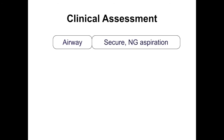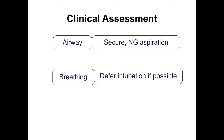Initial management of DKA starts like any acute condition: assess airway and secure it. Place NG tube if the child has had sugary feeds to prevent further hyperglycemia. For breathing — these children look sick but be very cautious about rapid intubation. Children with DKA improve dramatically with medical management. Intubation may temporarily increase CO2, exacerbating cerebral edema, and should be deferred unless the child is in a very dire state.